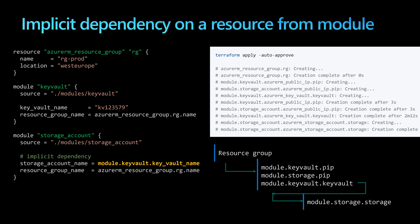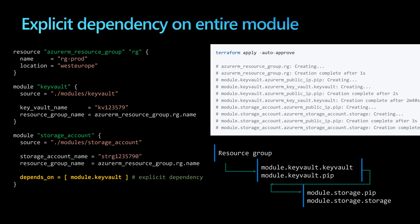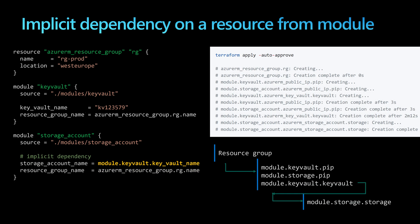The storage account here depends only on the key vault — not on all resources from the previous module as in the explicit dependency example. Using implicit dependencies is much better because it results in a reduced execution time, meaning your Terraform configuration will run faster.